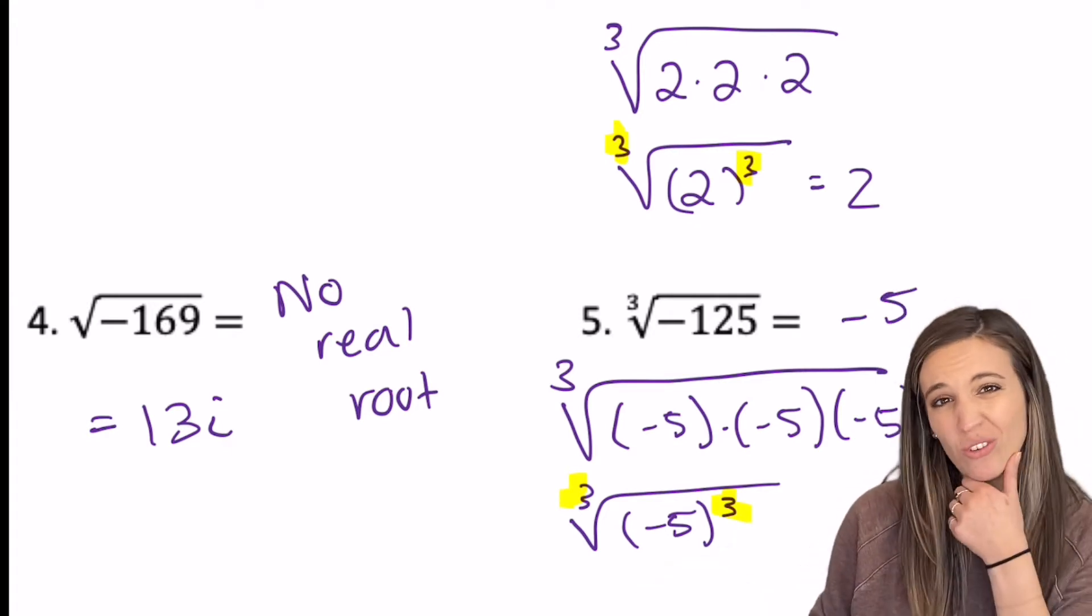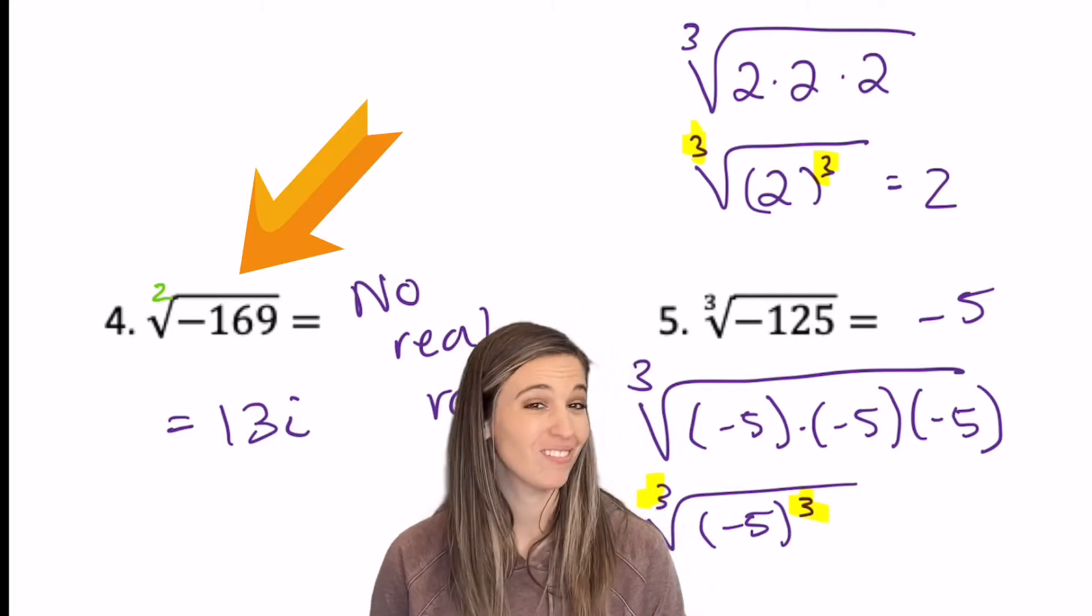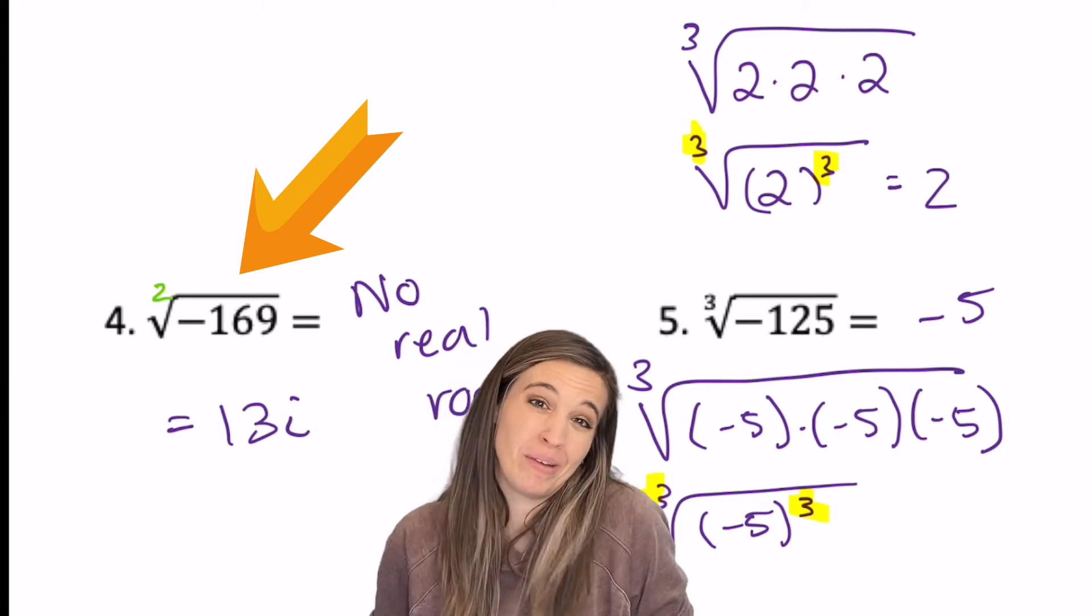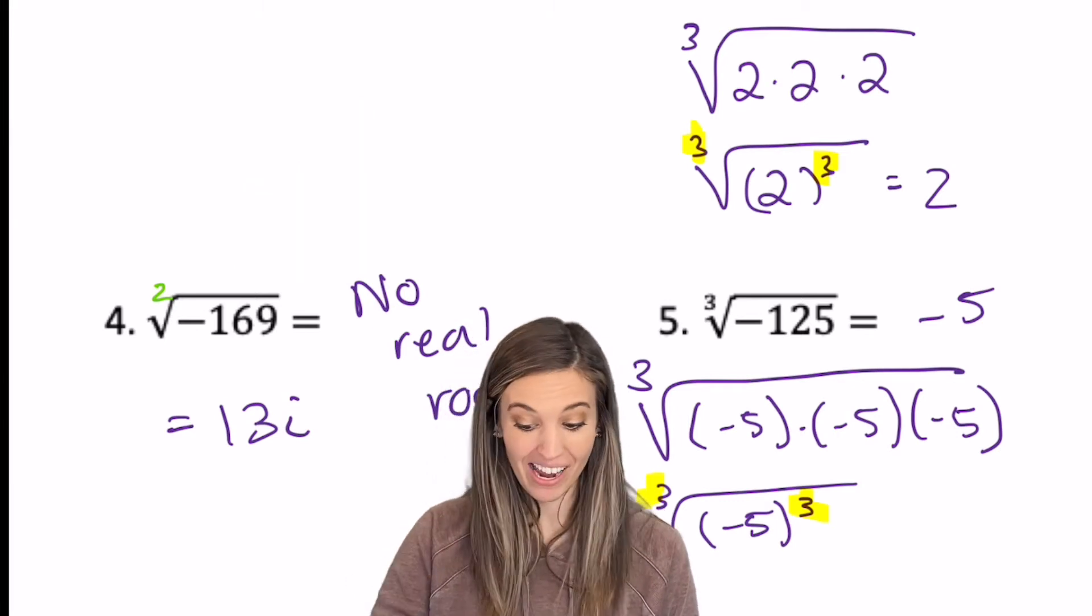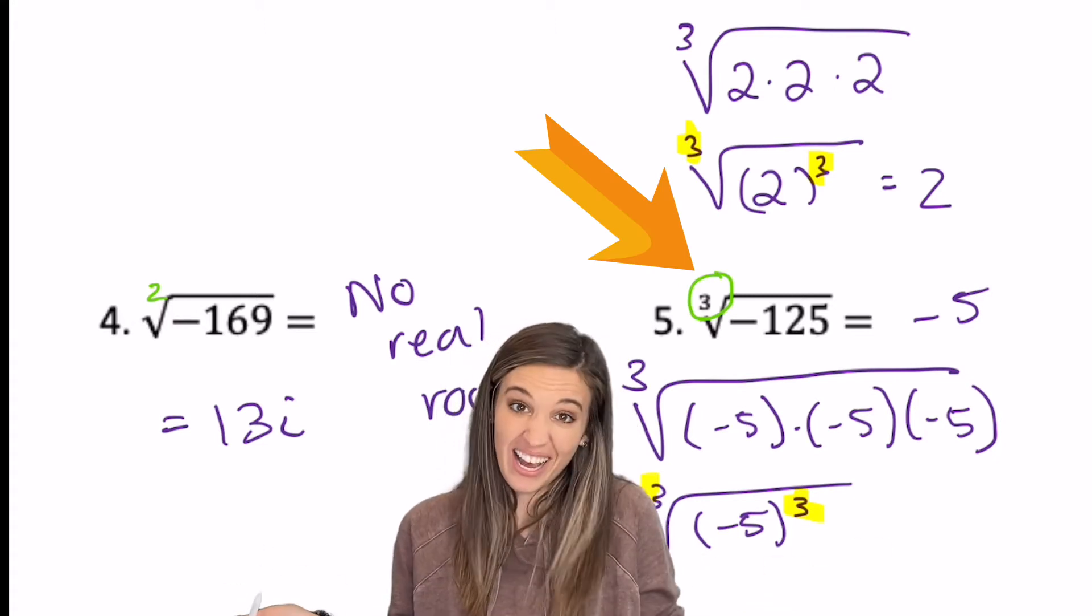No imaginary value needed. So it looks like if I take an even root of a negative number, I have no real root. I'm going to get an imaginary root. But if I'm taking the odd root of a negative number, I do have a real root and it's negative.